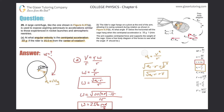Let me erase some of this work to make room for letter B. The rider's cage hangs on a pivot at the end of the arm, allowing it to swing outward during rotation as shown in figure 6.37b. At what angle theta below the horizontal will the cage hang when the centripetal acceleration is 10 g's? Hint: the arm supplies centripetal force and supports the weight of the cage. Draw a free body diagram.